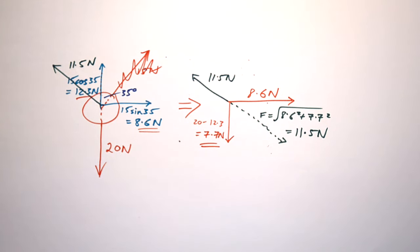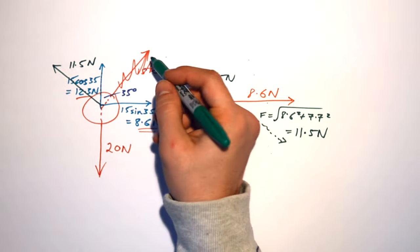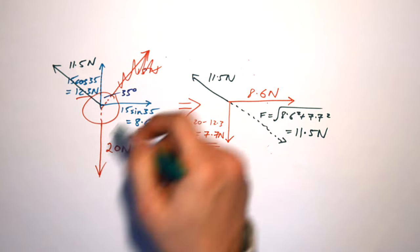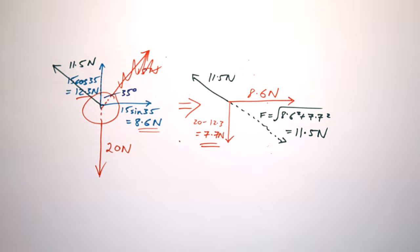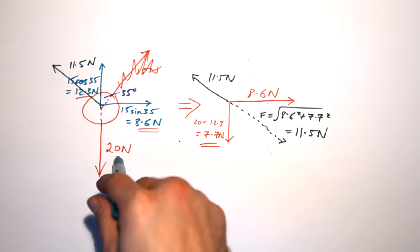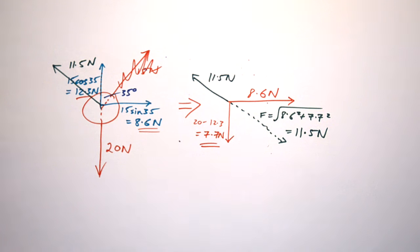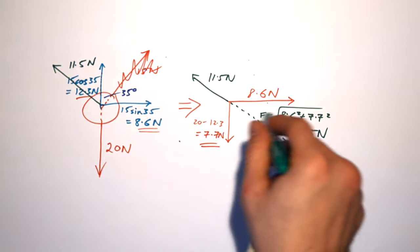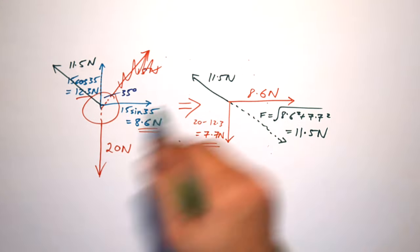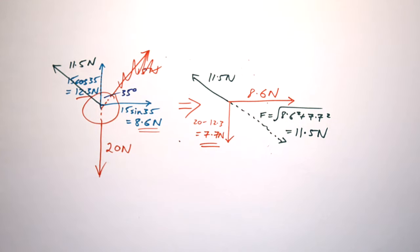So there you have it. When you have a system with forces pointing in all sorts of directions, all you have to do is resolve each force into its vertical and horizontal components. We didn't need to resolve the 20 Newtons because it was already vertical, so it has no horizontal component. Then find the resultant of all those components, and apply an equal force in the opposite direction to balance everything out.